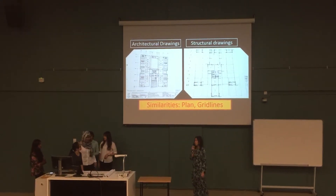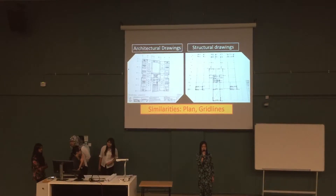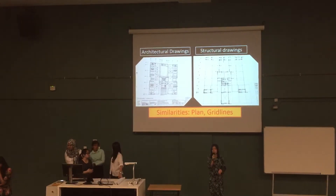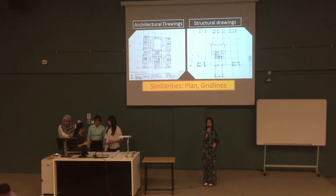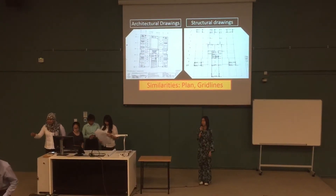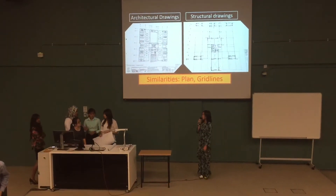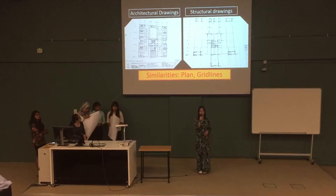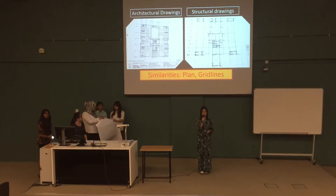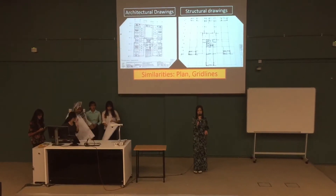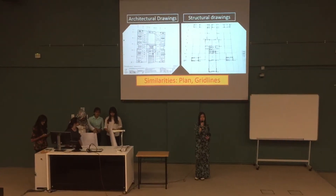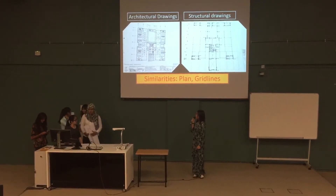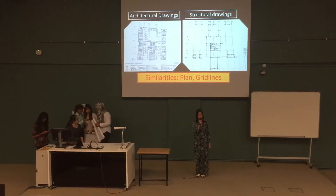The similarities between the architectural drawings and the structural drawings: first of all, both of these drawings provide floor plans. Since we took these drawings from the same project, obviously the floor plans are also the same. Next, these drawings also provide grid lines. The grid lines are normally used to locate the position of an item — for example, in structural drawings, we use the grid lines to locate the position of the beams. These drawings were drawn in detail, however they have their own ways of detailing things.